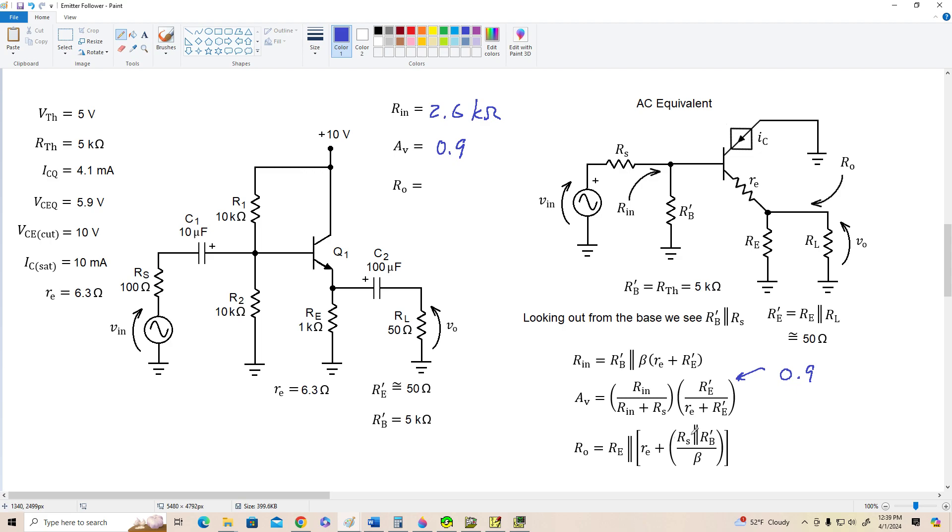Alright, and finally, the output resistance. So that's a little bit messy, but let's see what we've got. RS is 100 ohms, R prime B is 5,000 ohms. 100 in parallel with 5,000 is roughly 100. So we've got 100 ohms divided by beta, which is 100. So this term here is 1 plus little RE. So we've got a total here of 7.3 ohms in parallel with 1,000 ohms. So that's going to be 7.3 ohms.